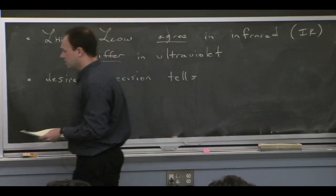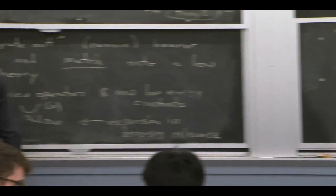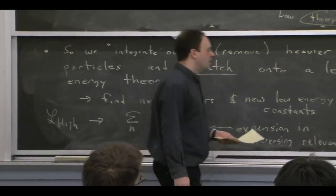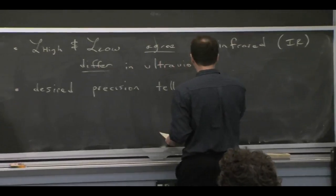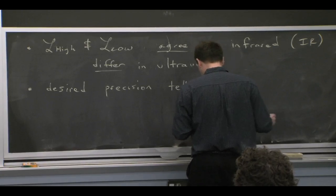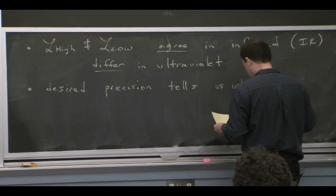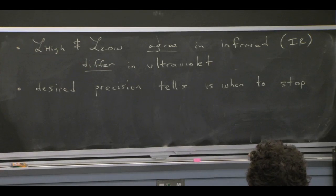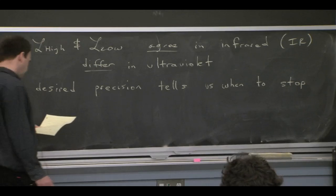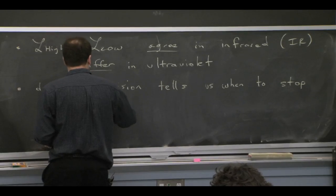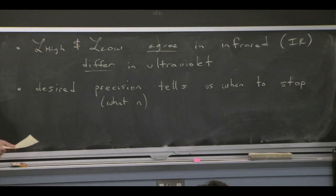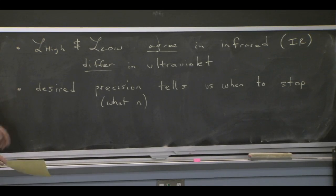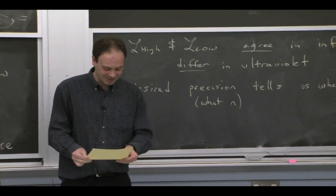You have to ask about this sum over n — it's infinite, it goes on forever, so you have to ask when to stop. You have to look to experiment and see how precise measurements are, or decide yourself what level of precision you want. Sometimes experiment tells you to only do the first two terms; sometimes you have to decide. If you're doing it for the first time, I suggest you stop at the beginning and let someone else do the corrections.